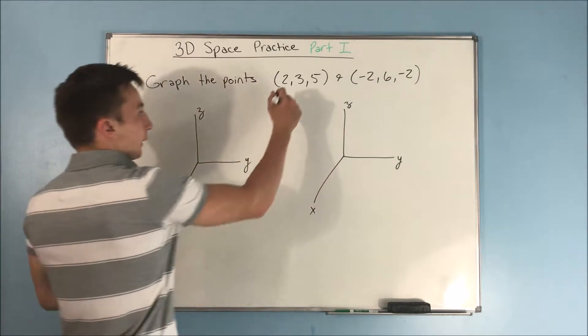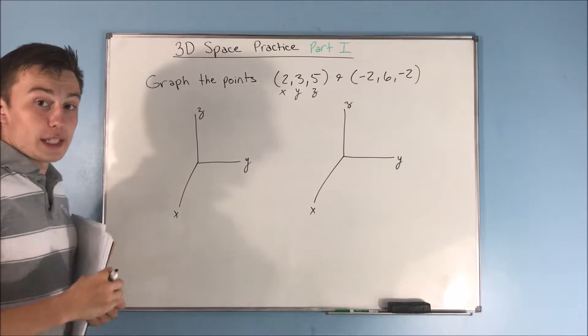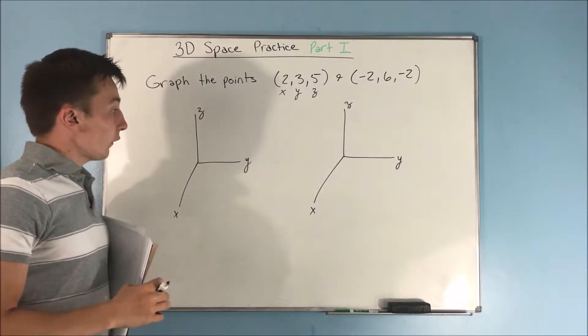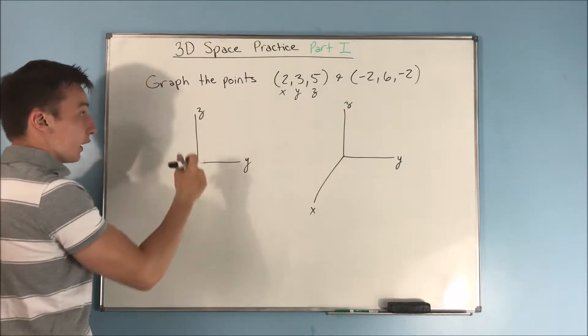So remember, these points are for the x, the y, and the z. Before it was just the x and the y, now we're adding the z coordinate on the end. So now our x axis is down here, our y axis is here, and our z axis is up.